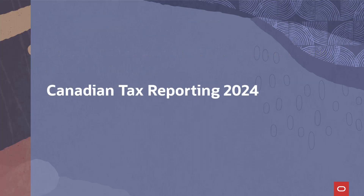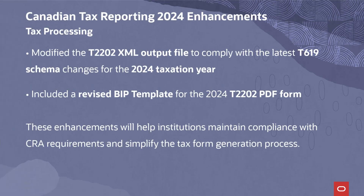Canadian Tax Reporting 2024: In this update, we have modified the T2202 XML output file to comply with the latest T619 schema changes for the 2024 taxation year, ensuring accurate tax reporting for Canadian institutions. Additionally, we have included a revised BIP template for the 2024 T2202 PDF form, streamlining the generation of student tax receipts. These enhancements will help institutions maintain compliance with CRA requirements and simplify the tax form generation process.